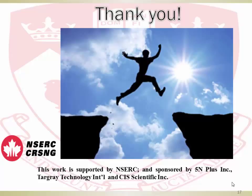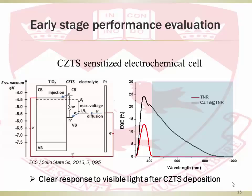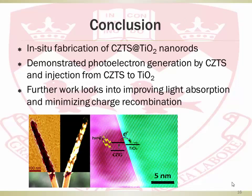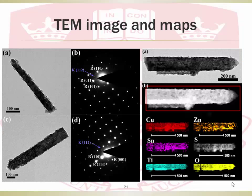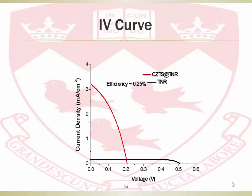Q: What about the efficiency of CZTS? A: That's a tough question. The quantum efficiency is about 20% in the blue light region, but unfortunately the voltage is really very low. When we calculate the overall efficiency, it's only about 0.2–0.3%. The integration of the IPCE spectrum gives a short-circuit current of about 3 mA/cm², confirmed by IV testing, but the open-circuit voltage is very low at only 0.2 volts — that's the direction we need to focus on to improve.